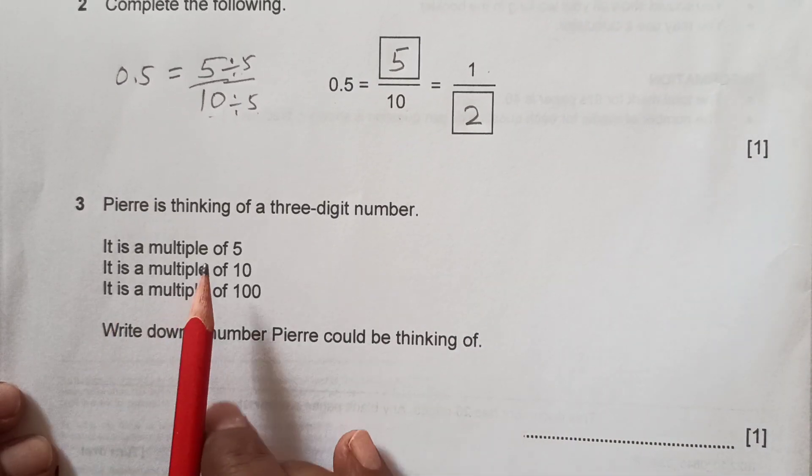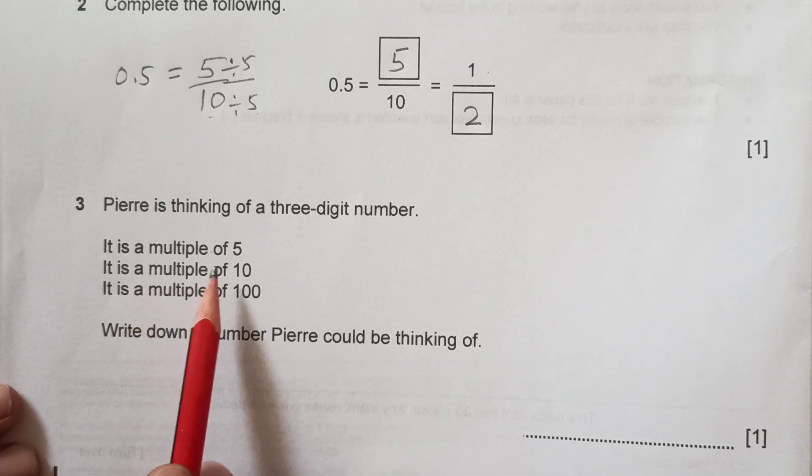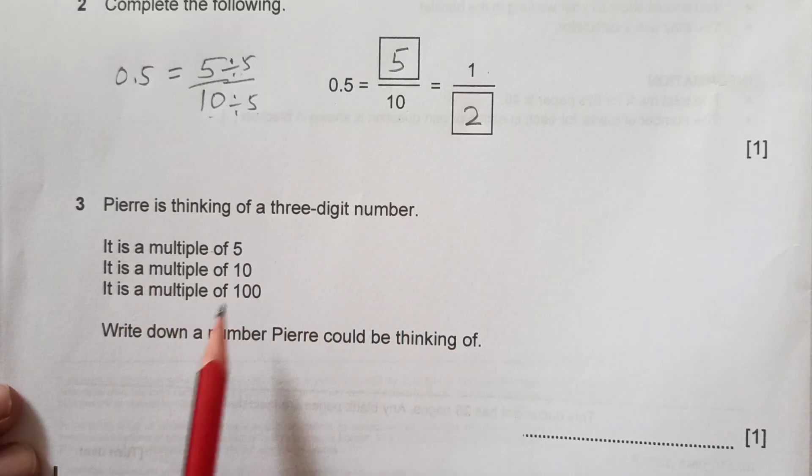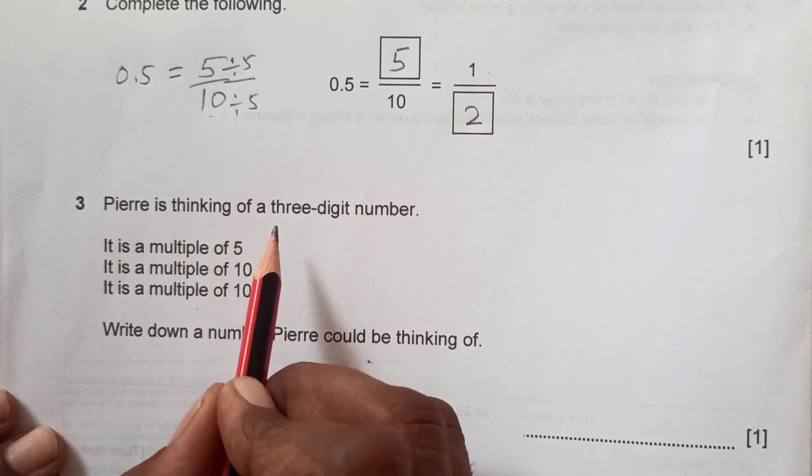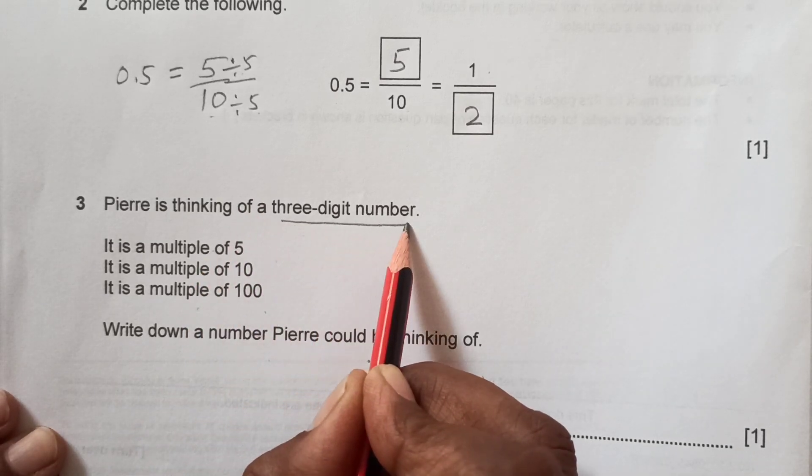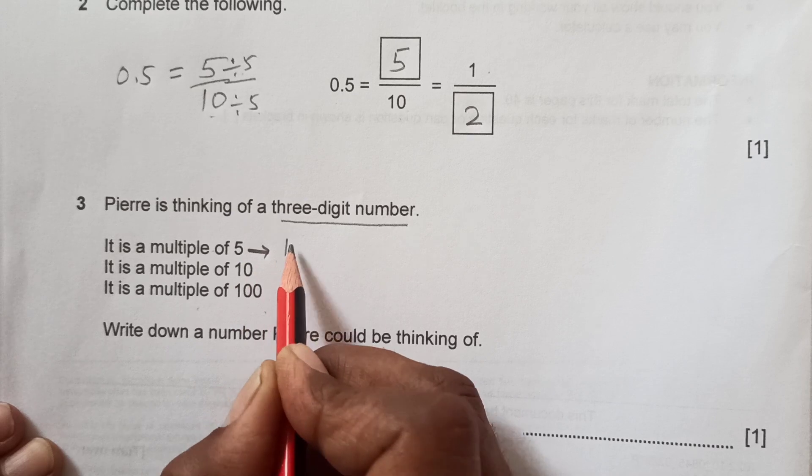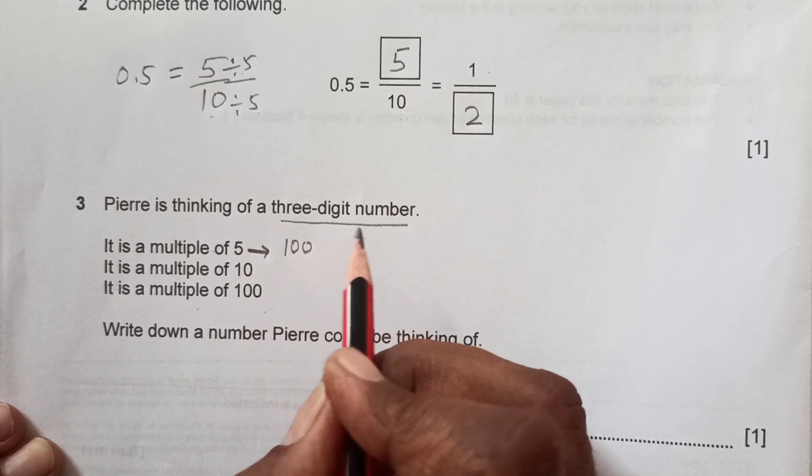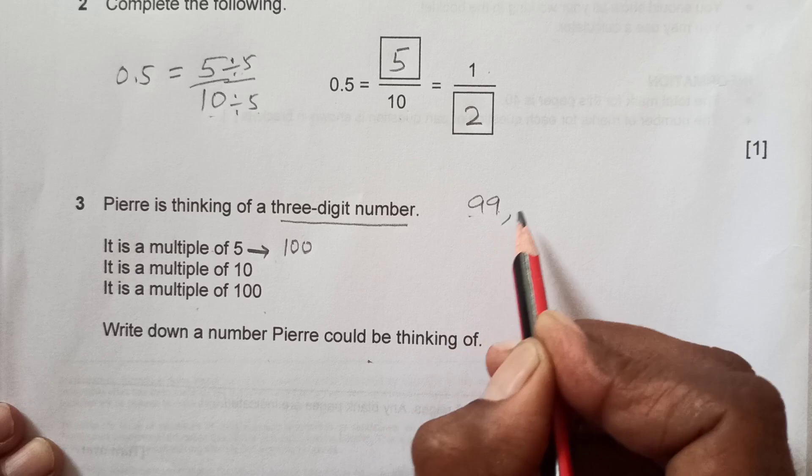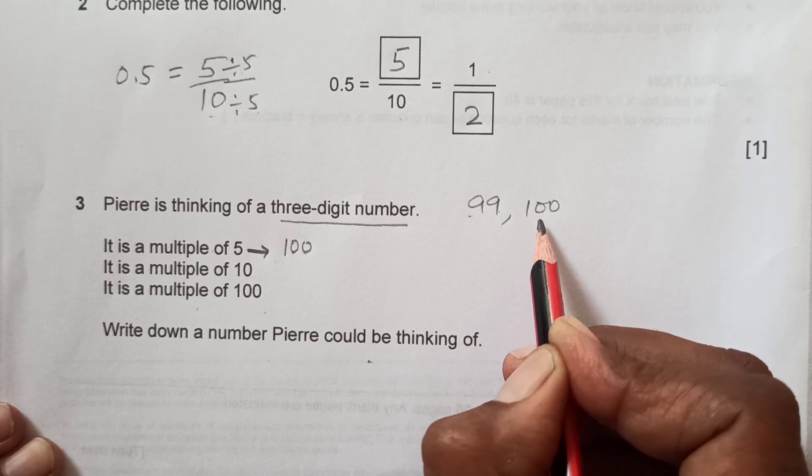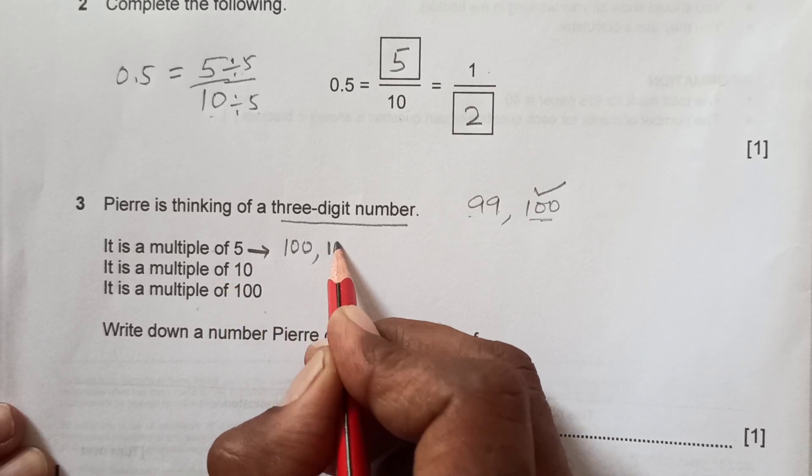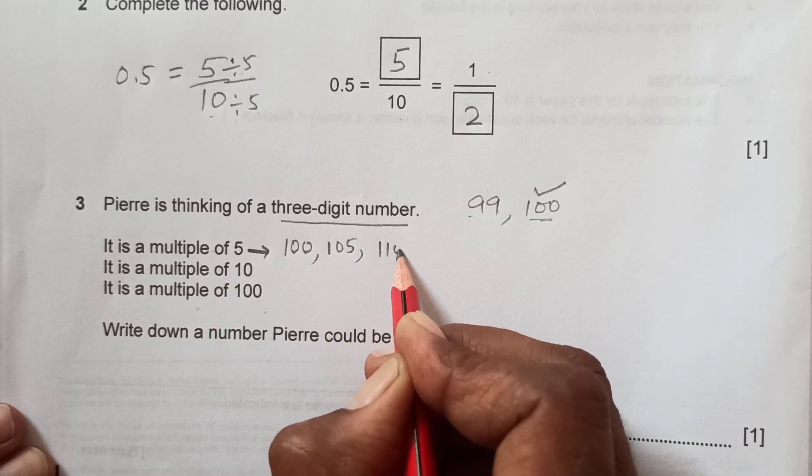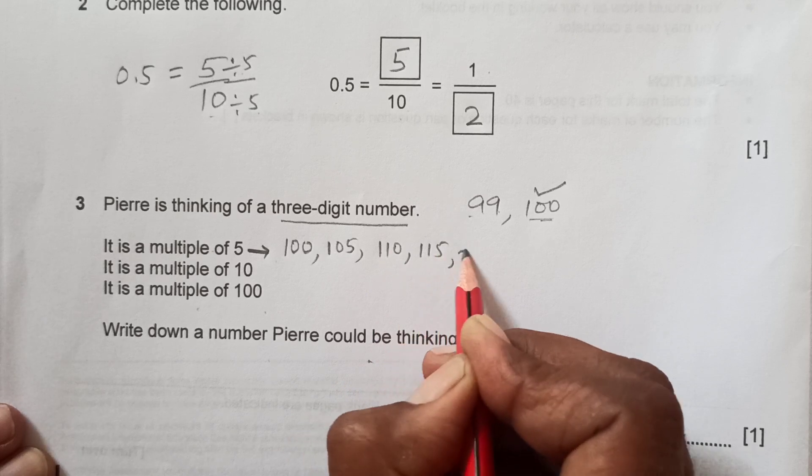Number 3: Pierre is thinking of a 3-digit number. It is multiple of 5, it is multiple of 10, it is multiple of 100. Write down the number Pierre could be thinking of. We are given here it is multiple of 5 but it is a 3-digit number. 3-digit number will start from 100. After 99, which has 2 digits, we have 100 which is 3-digit number. Multiple of 5: 100, adding 5, 105, 110, 115 and so on.